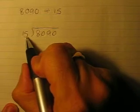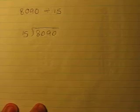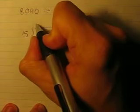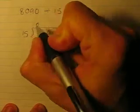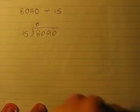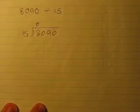The first question is: how many 15s can I get out of an 8? I can't get any two-digit numbers out of a one-digit number, so we'll start with a zero.